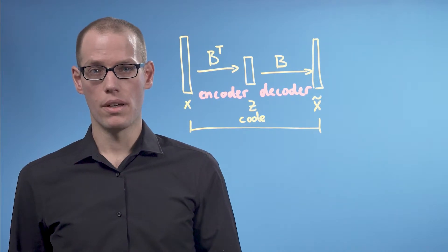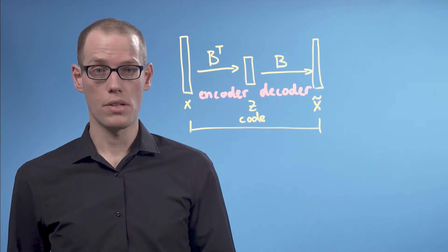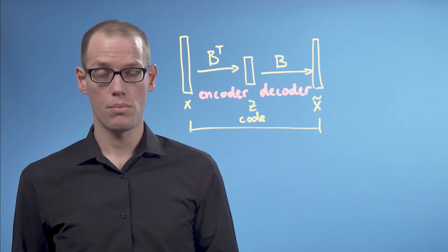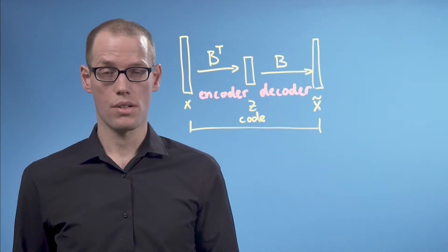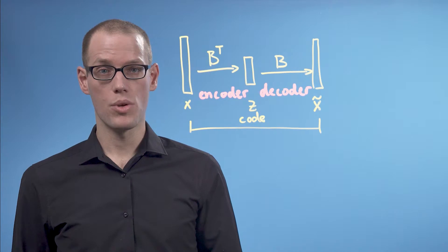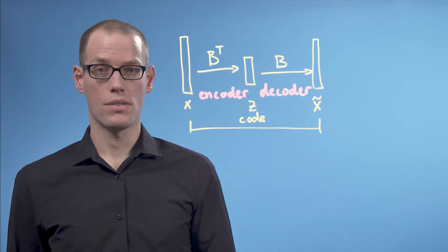More formally, this would be related to the mutual information. We would then get the same solution to PCA we discussed earlier in this course by maximizing the mutual information, a core concept in information theory.